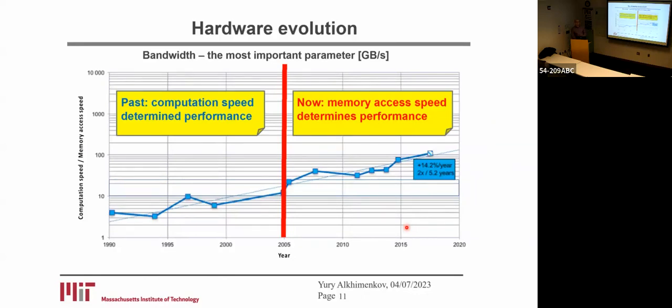Before 2005, computational speed was determined by floating-point operations. But after 2005, memory speed started to determine performance.